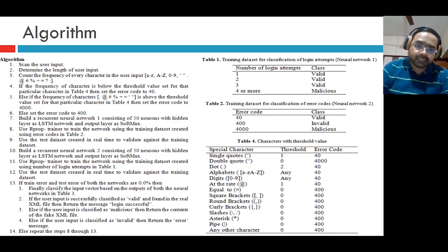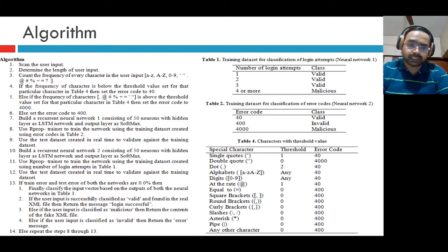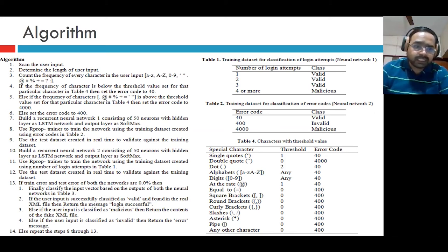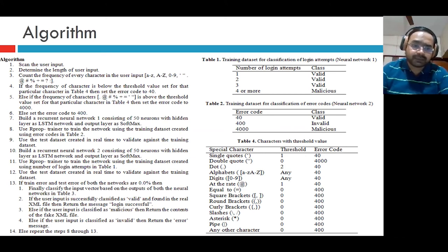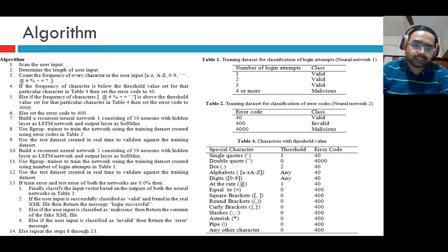Finally, classify the input vector based on the outputs of both neural networks. If the user input is successfully classified as valid and found in the real XML file, return the message 'login successful'. If the user input is classified as malicious, return the contents of the fake XML file. If the user input is classified as invalid, return the custom error message.